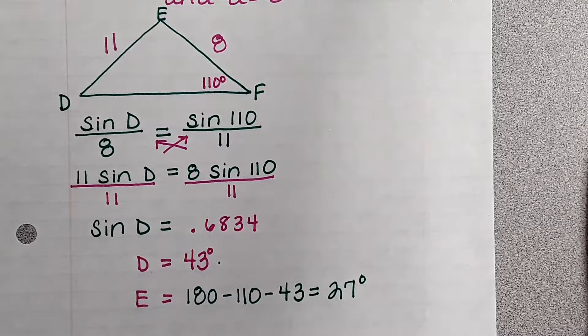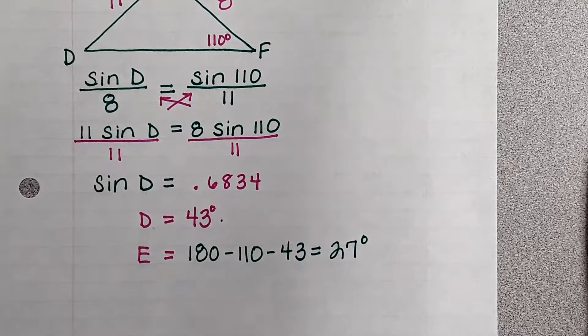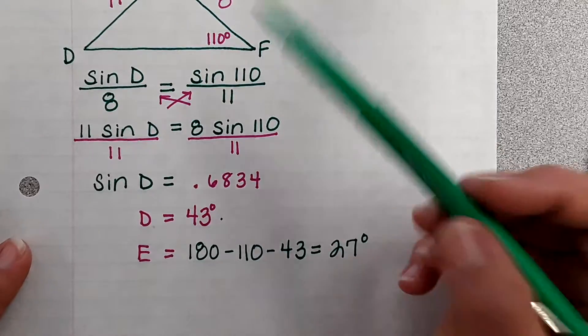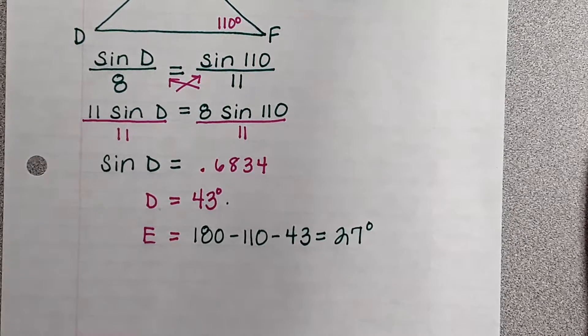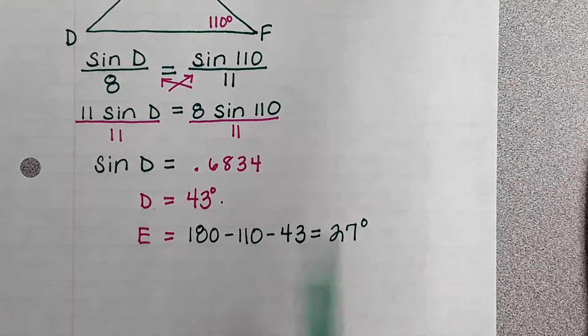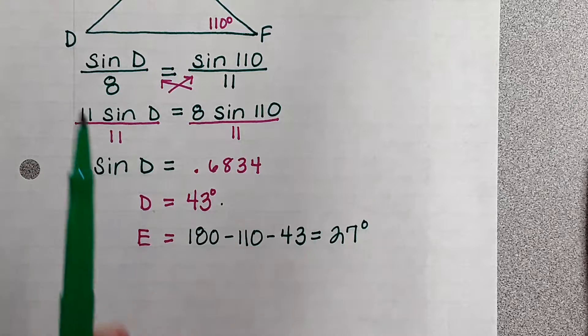But now I do have to find the last missing side, and the last missing side is side e. I'm going to use the f because they gave me f. Use the information they gave you, not the information you found. You want to use the angle they gave you and the side they gave you.